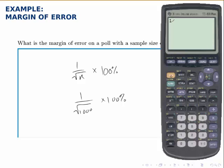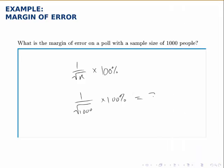One divided by the square root of a thousand is point zero three one six, et cetera, and multiplying by a hundred percent or converting to a percentage gives us three point one six percent approximately.